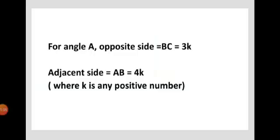For angle A, opposite side equals BC, that is 3K. Adjacent side equals AB, that is 4K. I already told that K is a positive integer.